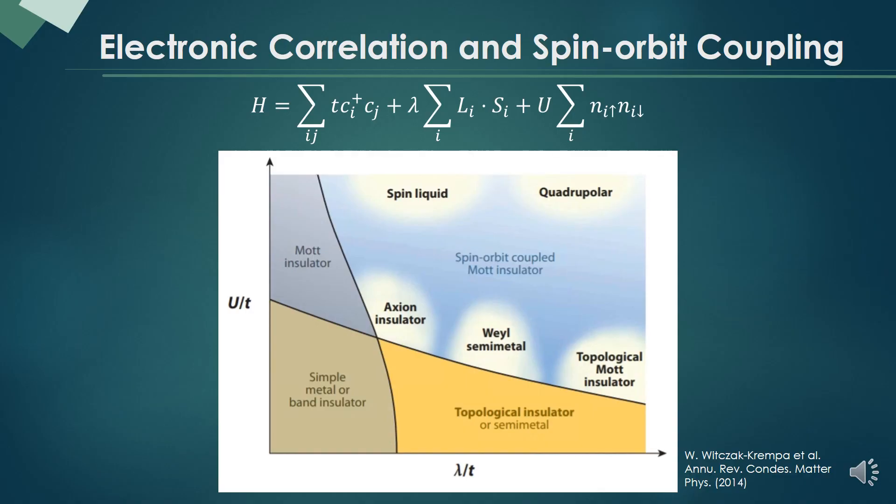The physics in condensed matter is largely determined by electronic correlation and spin-orbit coupling. When we denote spin-orbit coupling as λ and electronic correlation as U, we can draw such a 2D phase diagram.